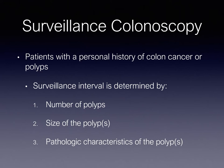When a patient with a personal history of colon polyps or colon cancer undergoes colonoscopy, we use the term surveillance colonoscopy. For example, if somebody is diagnosed with colon cancer and undergoes surgical treatment, we perform a surveillance colonoscopy one year after the surgery. The interval is then increased to three years and finally five years. In patients with a personal history of colon polyps, the surveillance interval is determined by multiple factors.